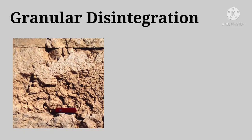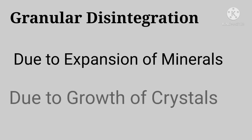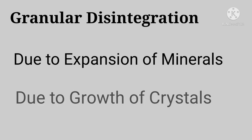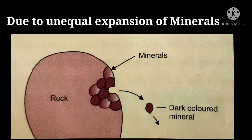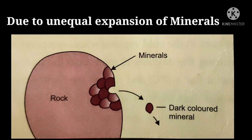The last type of physical weathering is granular disintegration, which occurs in two ways: due to expansion of minerals, and due to growth of crystals. In the first case, a rock contains various minerals of light and dark colors — light-colored minerals reflect solar rays while dark-colored minerals absorb more heat and expand more. This unequal expansion causes cracks to develop, and minerals are separated from the rock, forming cavities and disintegrating into grains.